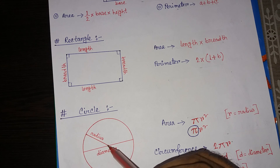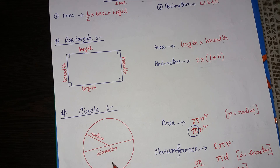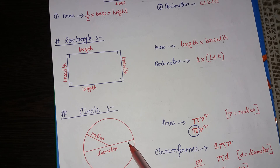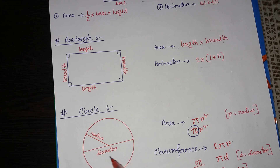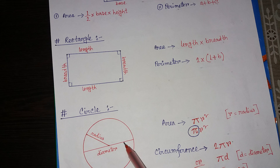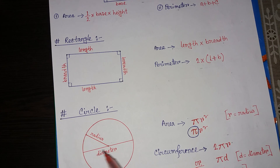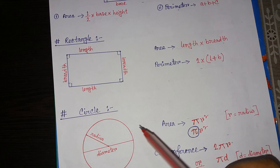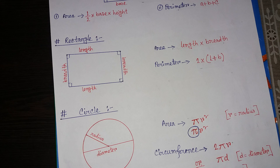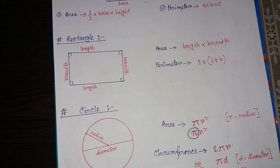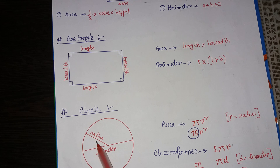Here is the center, and this distance around the circle — this is the circumference. The distance from this point to this point is called the radius. The diameter is a straight line passing through the center of the circle, touching both sides of the circumference. So this is the diameter and this is the radius.